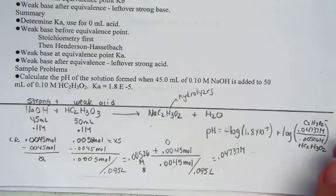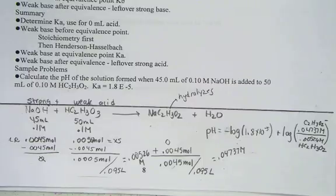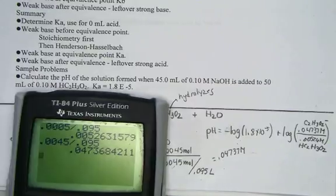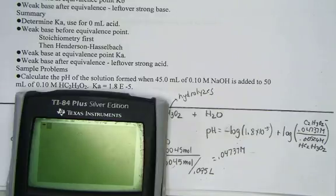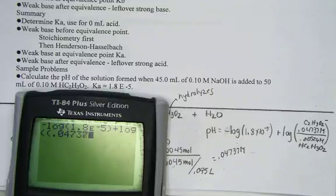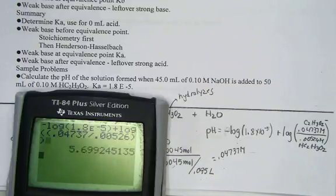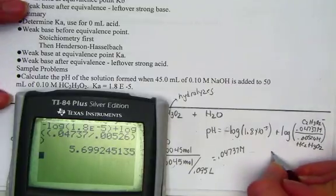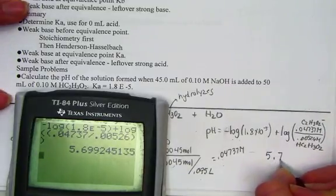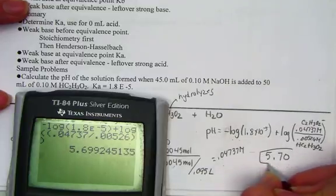Let's hit for the pH of our solution. pH is equal to pKa plus the log of the ratio of base over acid. Let's hit and see what we find. So negative log of 1.8 e negative 5 plus the log of the ratio of 0.04737 divided by 0.00526. And our pH is giving us 5.699. I'll say 5.70 pH units.